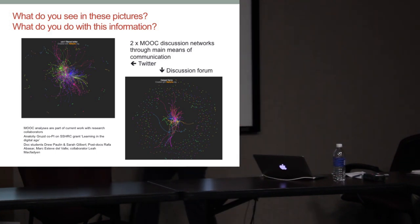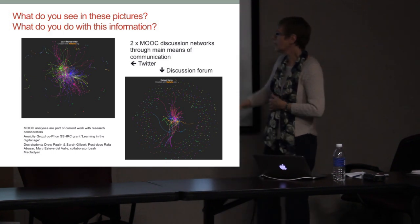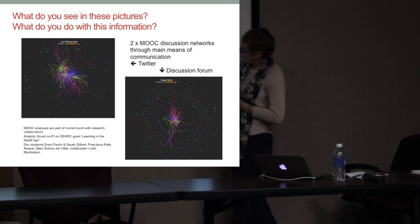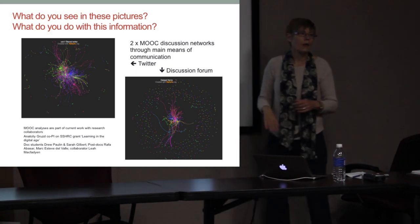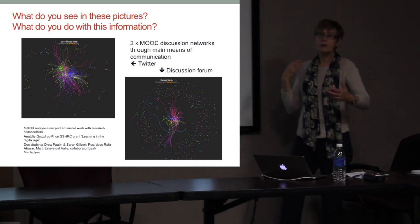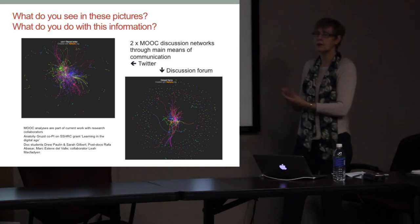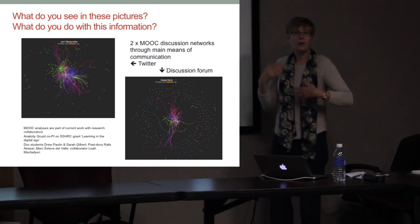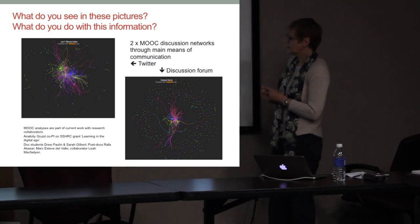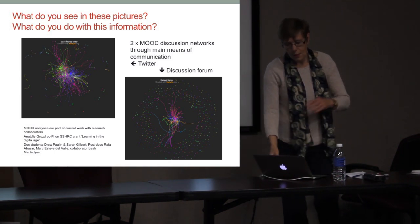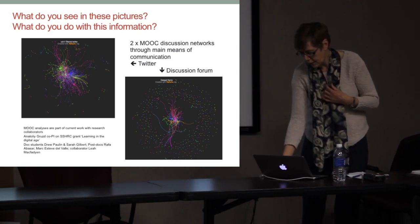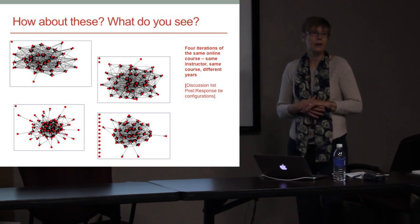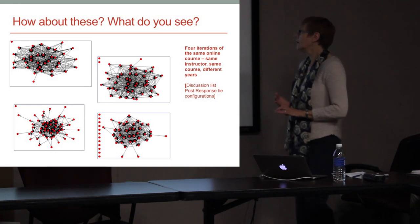Here we see an ethereal cluster in the middle and tons of dots around the outside. We already intuitively know there's a significant difference in the organization of these two — this was a discussion forum, and these are both from MOOCs. So we go from this and start interpreting. What information are we getting from these kinds of pictures? Here are four iterations of the same online class — same instructor, same course, different years.